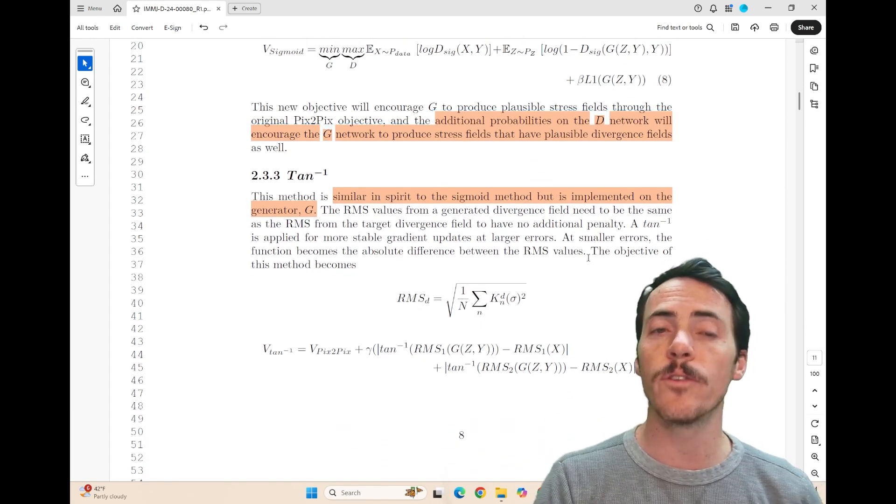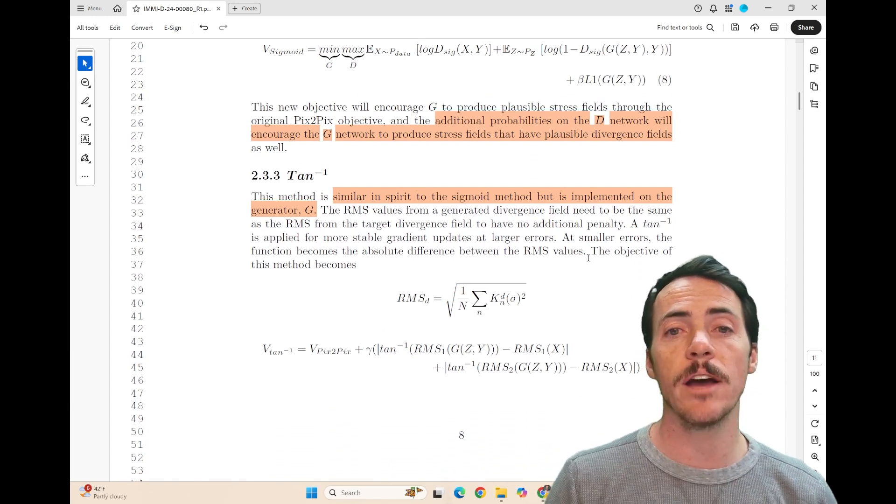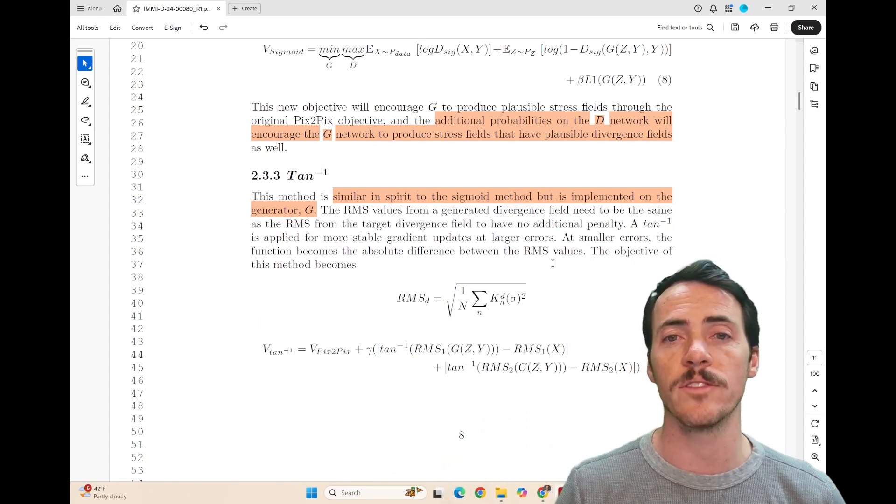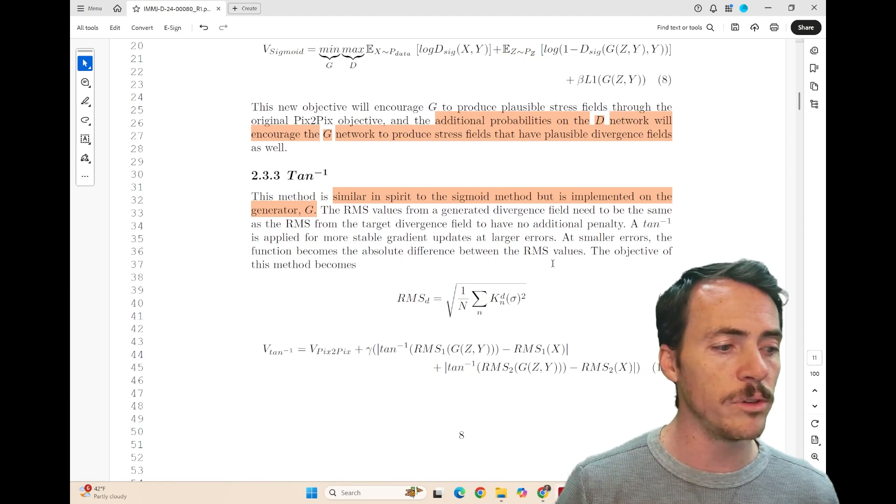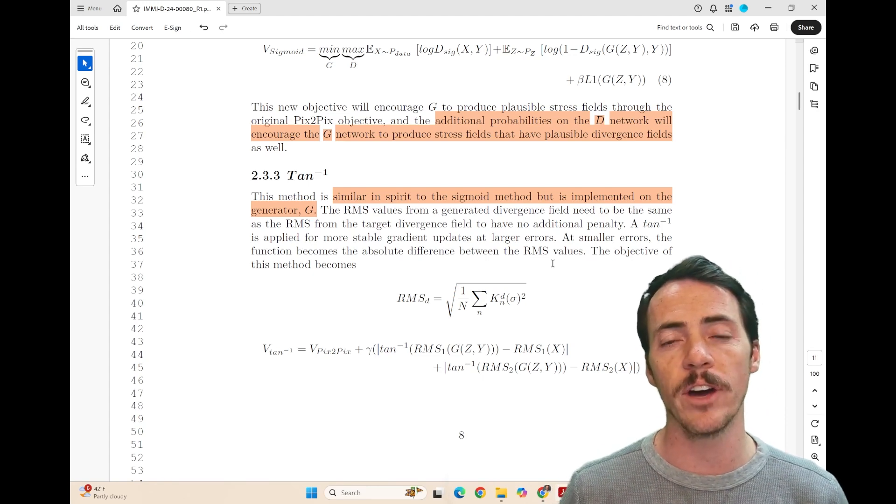And then they'll try it again with the inverse tangent approach. This is now going to do essentially a similar thing as the sigmoid function, but it will be implemented on the generator, and it allows us to do a non-linear comparison of the divergence errors.